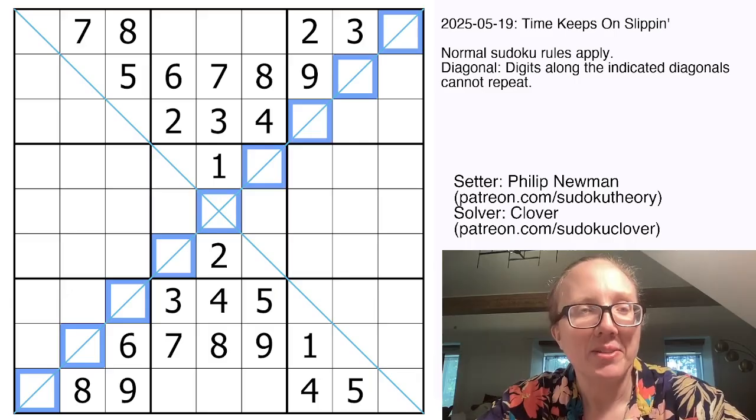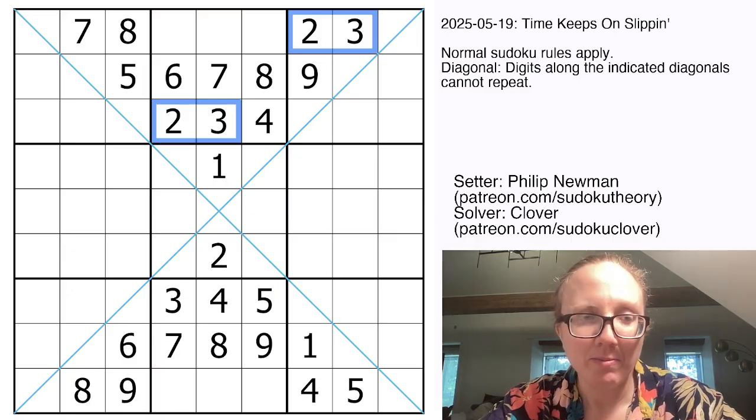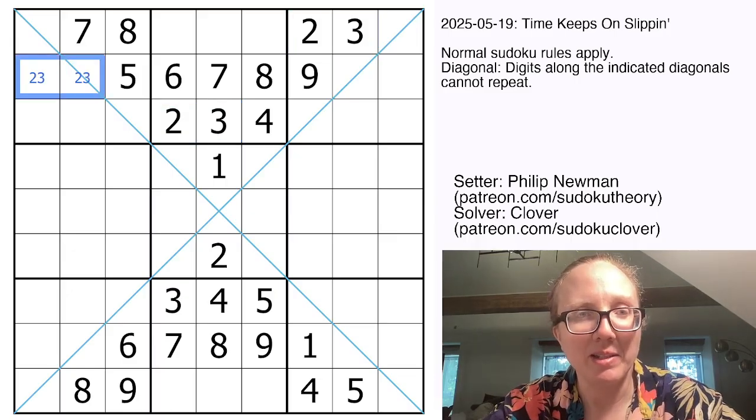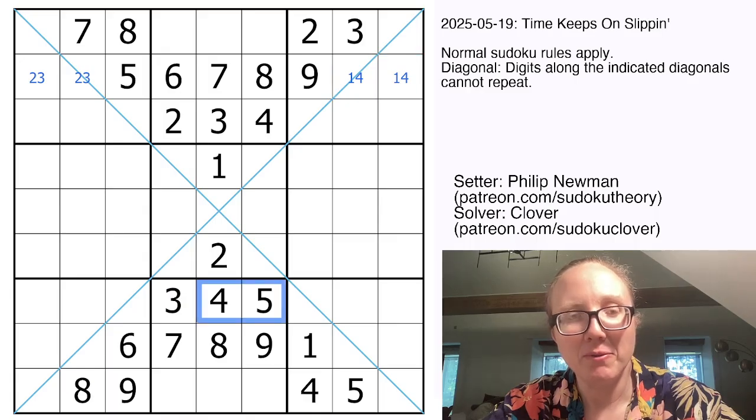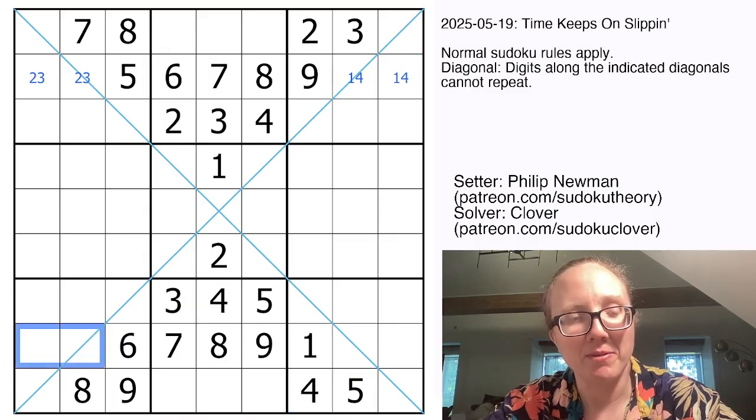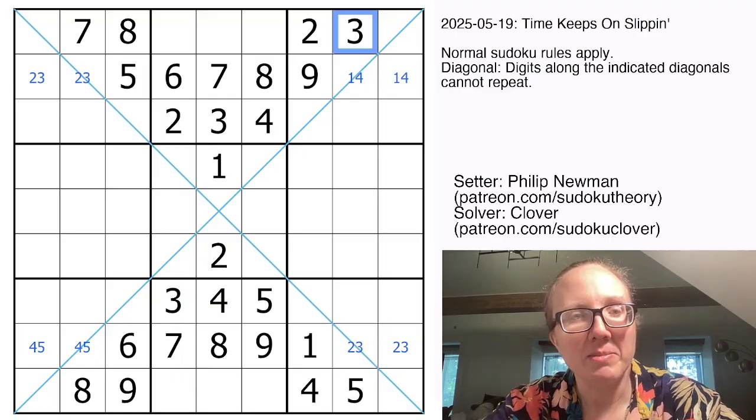So the first thing I notice is that I have 2 and 3 here, 2 and 3 here. So where am I going to put 2 and 3 in row 2? Right there. That leaves us with 1 and 4 to finish off the row. I have 4 and 5 here, 4 and 5 here. So where am I going to put 4 and 5 in this row? They have to go right here. That makes these 2 and 3. And I have a 3 here, so that's going to make this digit a 2 and a 3.